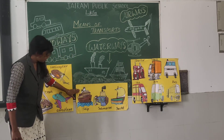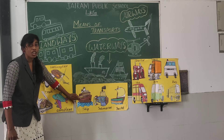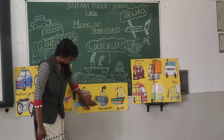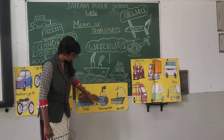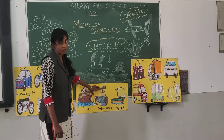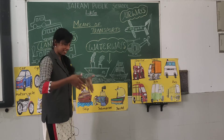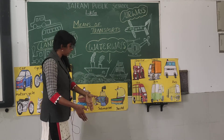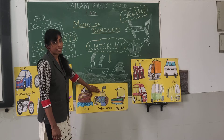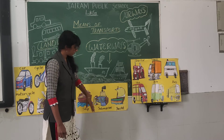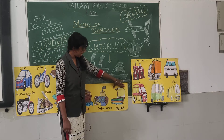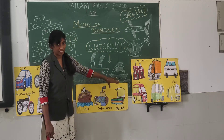And these are seaways — waterways. What is this? This is a ship. What is this? This is a submarine. A submarine sinks in the water and it travels — it sinks inside the water and travels. What is this? Submarine. What is this? This is a yacht.